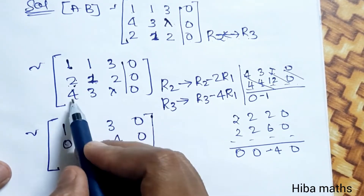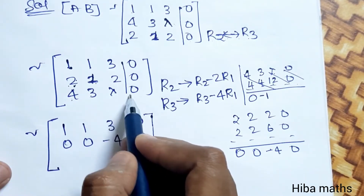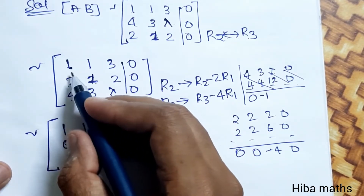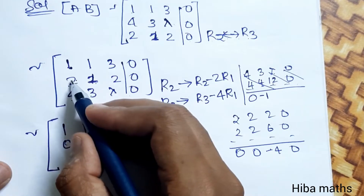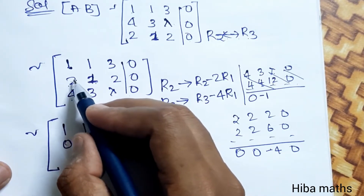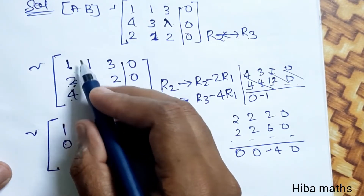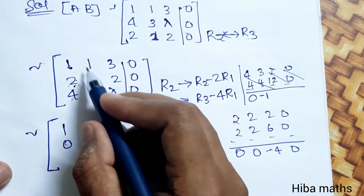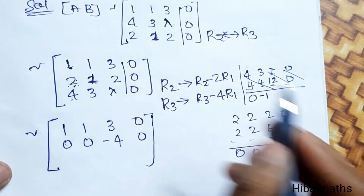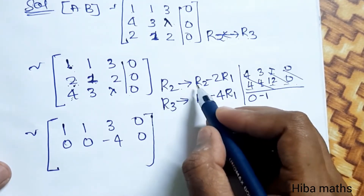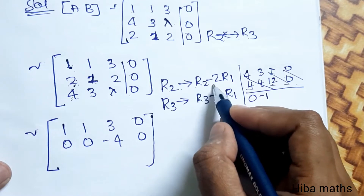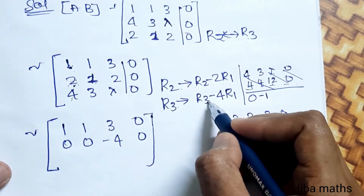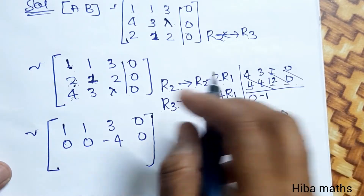After the interchange, the new R2 is 2, 1, 2, 0 and R3 is 4, 3, lambda, 0. Now we apply row operations: R2 changes to R2 minus 2 times R1, and R3 changes to R3 minus 4 times R1.